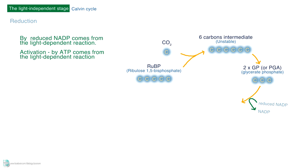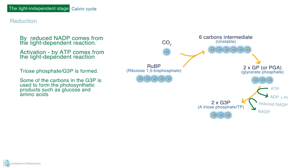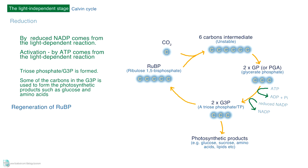Then the GP is reduced, using the reduced NADP from the light-dependent reaction. It is also activated by ATP from the light-dependent reaction. A triose phosphate, also known as G3P, is formed. Some of the carbons in the G3P are used to form photosynthetic products such as glucose and amino acids, while the rest are used to regenerate RuBP so the cycle can continue. Energy from ATP is required in this step.